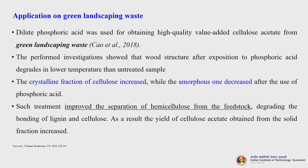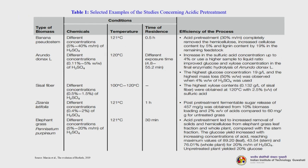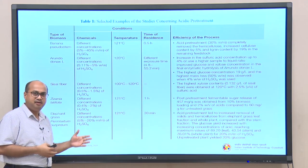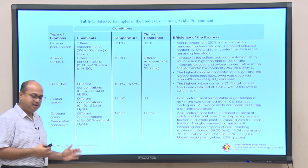Application on green landscaping waste: dilute phosphoric acid was used for obtaining high quality cellulose acetate. The investigation showed that wood structure after phosphoric acid exposure degrades at lower temperature than untreated sample. The crystalline fraction of cellulose increased while the amorphous fraction decreased after phosphoric acid treatment. Such treatment improved separation of hemicellulose from the feedstock, degrading the bonding of lignin and cellulose. As a result, the yield of cellulose acetate obtained from solid fractionation increased. This table gives selected examples of studies concerning acid pretreatment; please refer to it later.